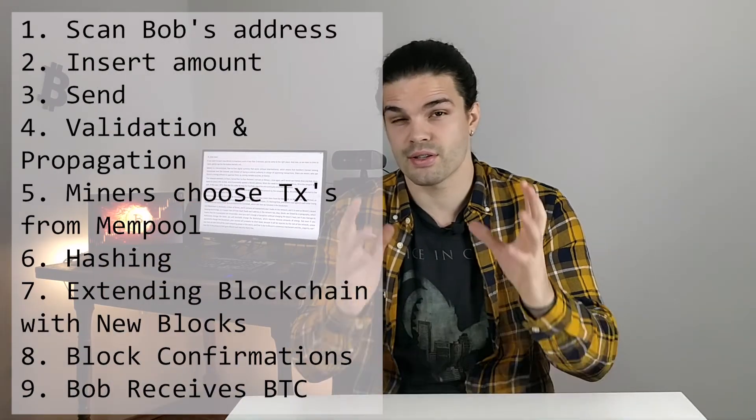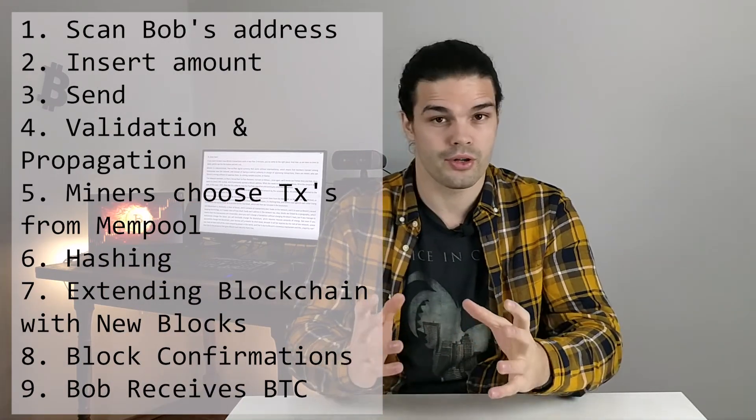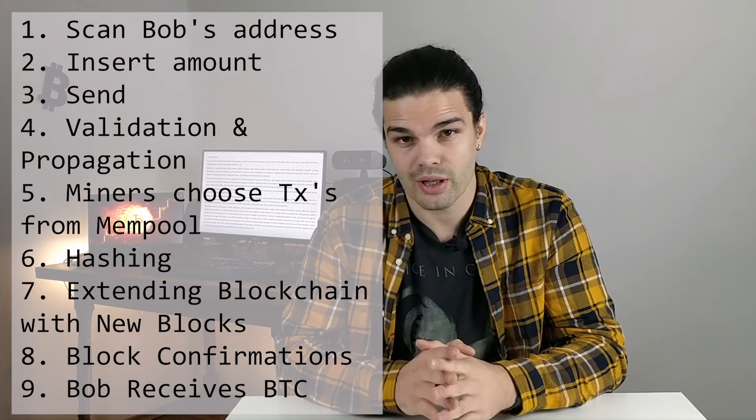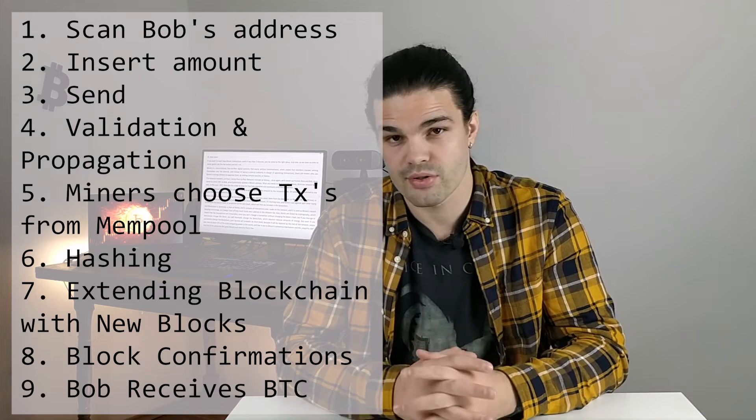And finally, after a certain number of block confirmations, Bob receives Alice's Bitcoin and he is free to do with it whatever he wants. And all this is executed without banks or any other intermediaries, and very likely for a considerably smaller fee. Thanks for watching. If you like this type of video, please take a second to leave a like, as it really helps the channel grow. Stay tuned for more videos in the future, keep mining, and I'll see you, my miners, in another block.